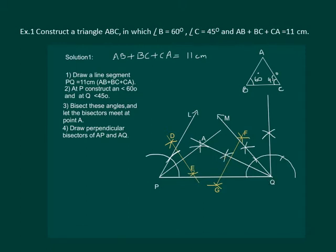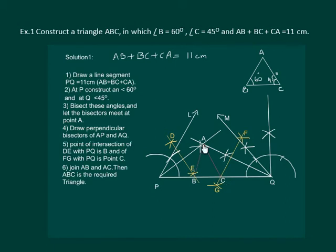Now let the point of intersection of DE with PQ be called B, and the point of intersection of FG with PQ will be called C. Now join AB and AC. Then ABC is the required triangle.